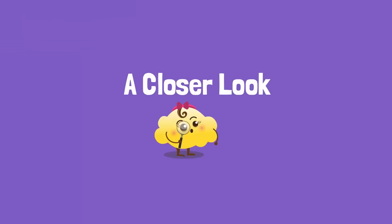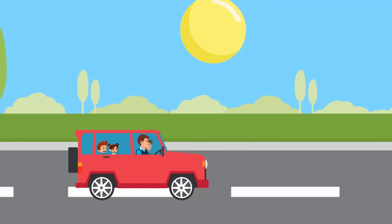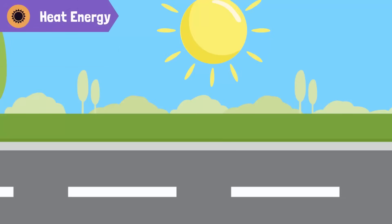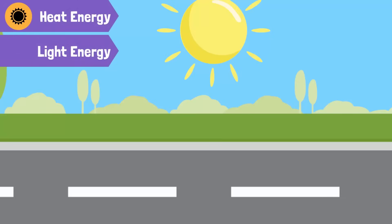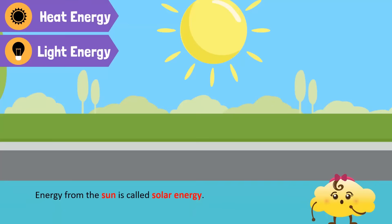Let's identify different forms of energy around us. A family is going on a picnic. It's a sunny day. The sun provides us with two different forms of energy — can you guess what these are? Heat and light energy. Energy from the sun is called solar energy. Plants use solar energy for photosynthesis.